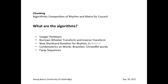Chunking contains algorithms for integer partitions. These are all sums of positive integers that are contained within a particular integer. For example, 10 contains the sum 1 plus 2 plus 3 plus 4, or the sum 3 plus 7, or the sum 6 plus 2 plus 2.